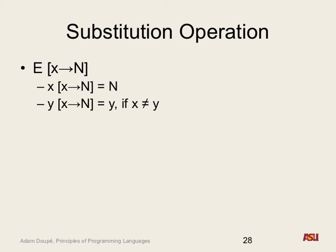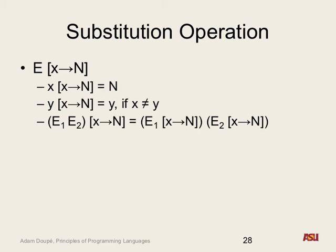What about function application? If e is a function application — e is actually e1 space e2 — you just do the substitution operator on e1 and e2. We distribute the substitution operator to both expressions, to expression one and expression two. There's nothing special about application here.